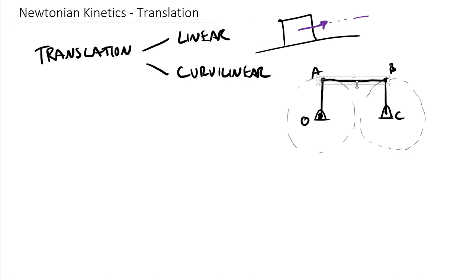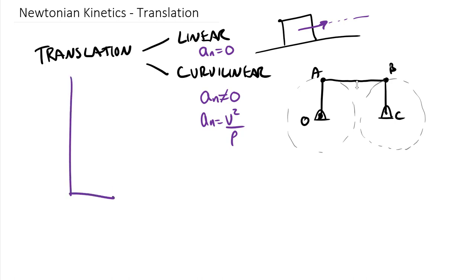Curvilinear translation turns out to have the exact same relationships, the exact same fundamental equations. The only thing that curvilinear picks up that linear doesn't is that we do have a normal acceleration not equal to zero for curvilinear — and that's because normal acceleration is based upon linear velocity. We can use a_n = v² / ρ (radius of curvature) for curvilinear, whereas for linear motion a_n equals zero. Other details for translation in general: our angular velocity ω must equal zero, and our angular acceleration α must also equal zero. If the body is not rotating, it has no angular velocity and no angular acceleration.